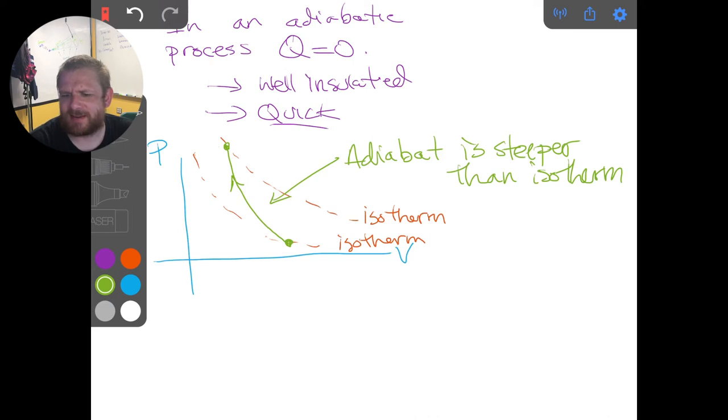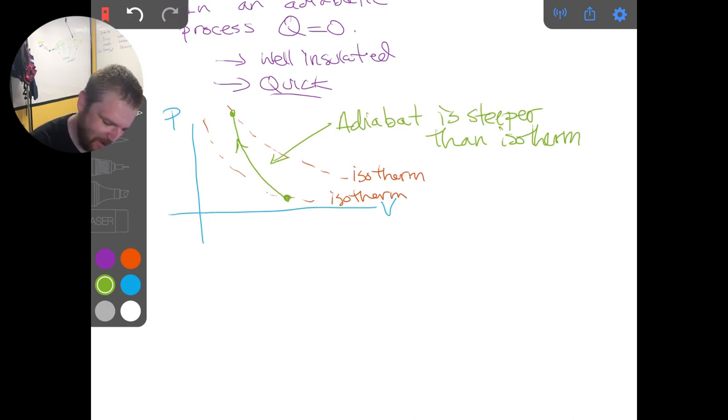So in terms of the mathematics, the derivation of these is beyond the scope of this class. I really never actually derived them, but I will just give you the answers in terms of how we relate these two. Now, if we have some initial pressure and volume at state one, so we have some P1 and some V1 here, and up here we have some P2 and V2, then along the adiabatic we have that P1 times V1 to the gamma power is equal to P2 times V2 to the gamma power.